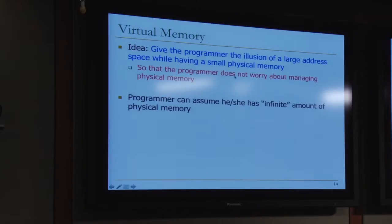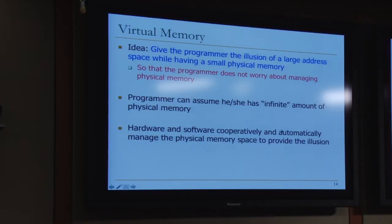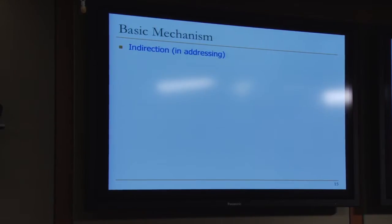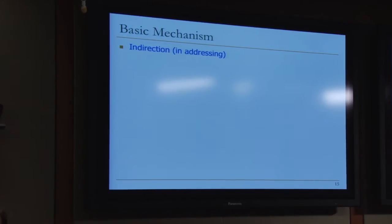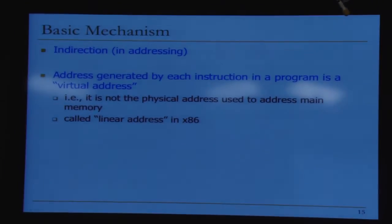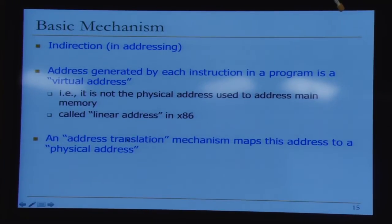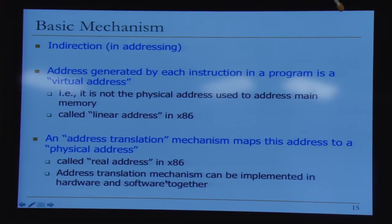The programmer assumes infinite memory and hardware and software cooperatively manage physical memory automatically to provide this illusion — maintained per process. The basic mechanism is indirection: a layer of indirection sits between the address in the program and the address used to access physical memory, with potentially multiple levels of indirection. The address generated by each instruction is a virtual address — also called a linear address in x86 — not the physical address used for main memory. An address translation mechanism maps this virtual address to a physical address, called a real address in x86.